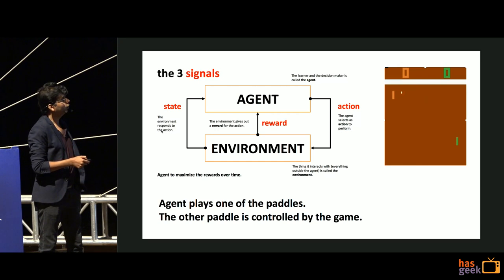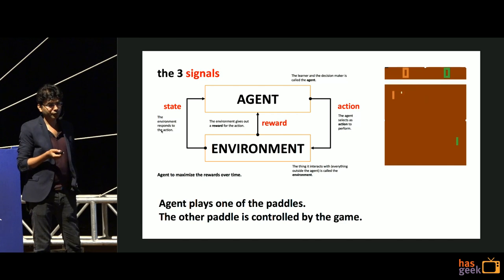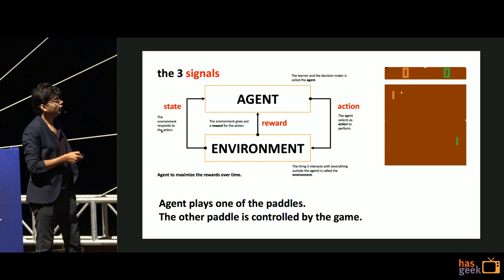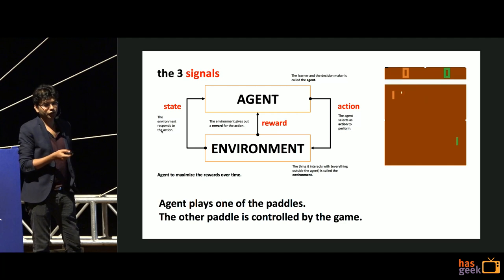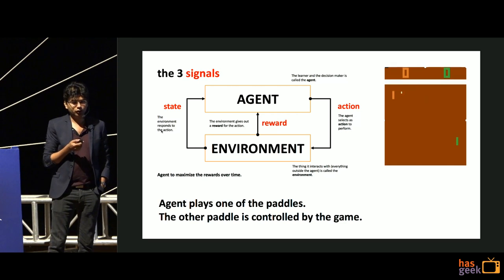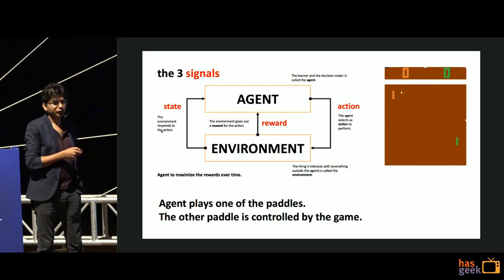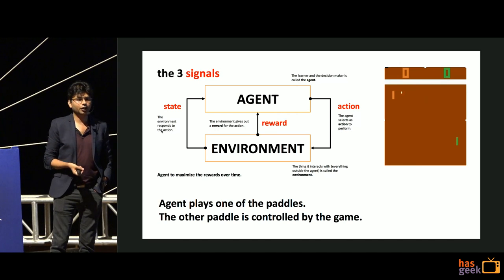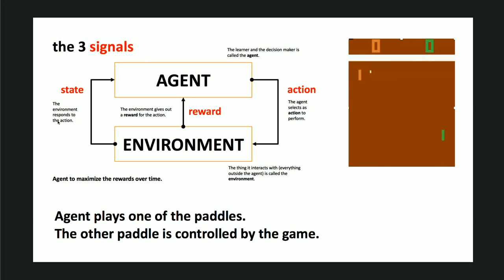Every time you hit the ball and the opponent cannot intercept it and it goes out of bounds, you win. If the opponent hits it and you cannot intercept it, you lose. You get a reward of one for winning or zero for losing. The green paddle is the RL agent - I'll play this game many hundreds of thousands of times to figure out how to play perfectly, without any supervision. No one tells me how to play; I figure out how to win by playing against an opponent.